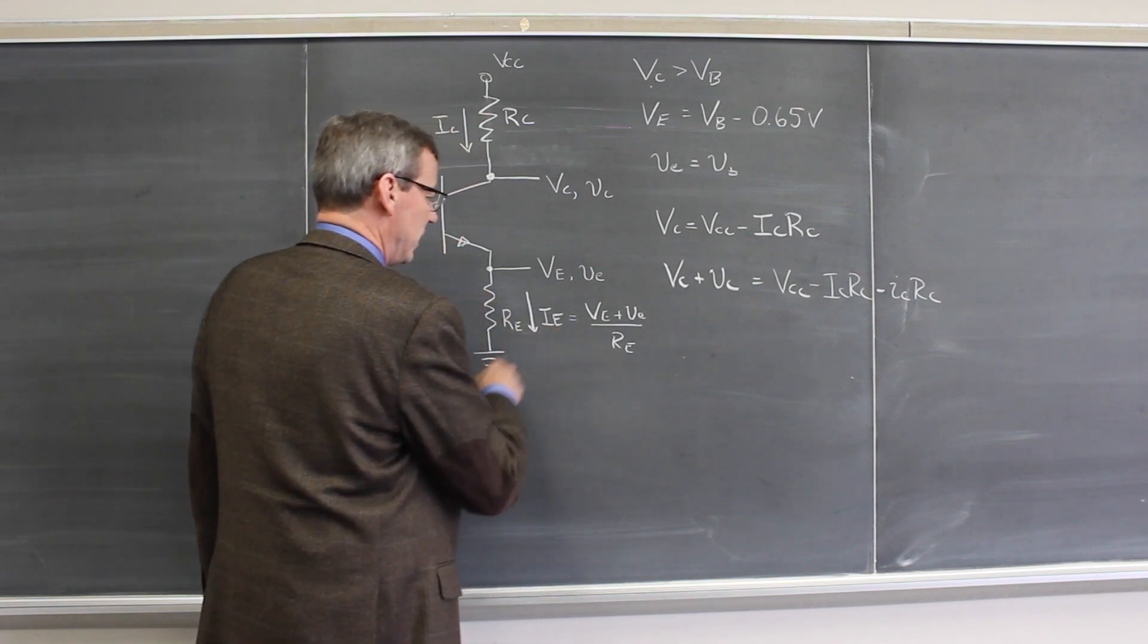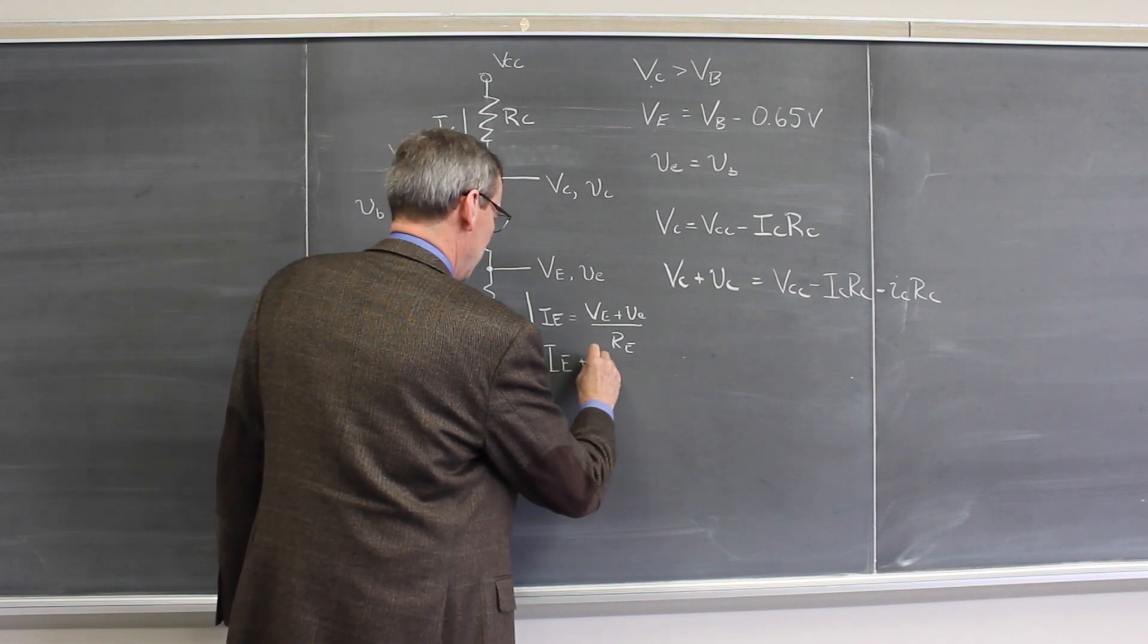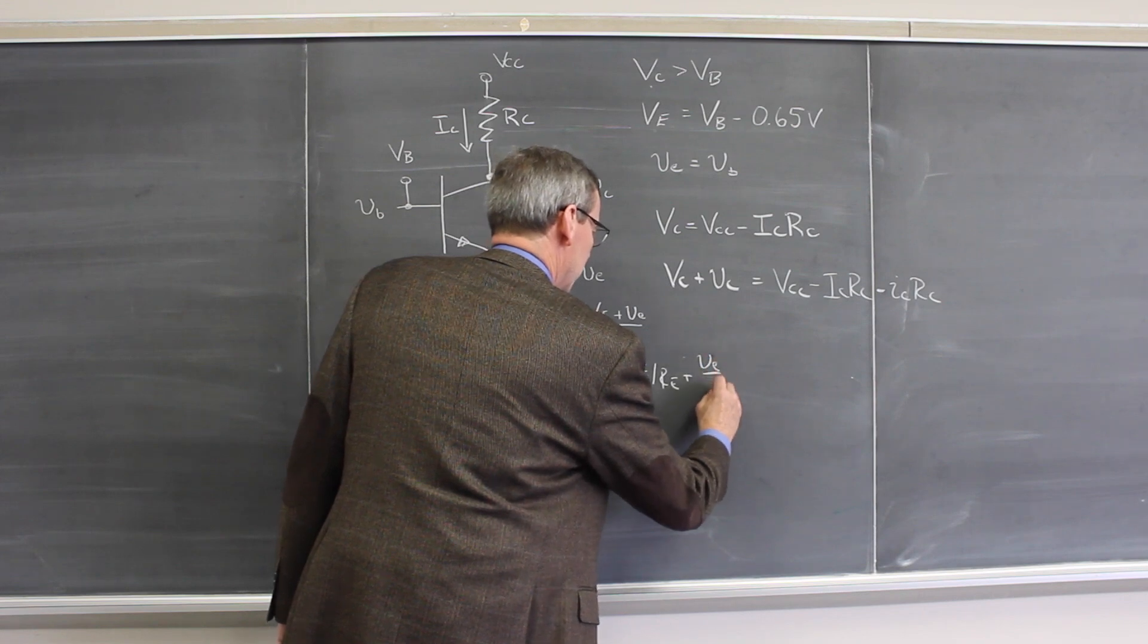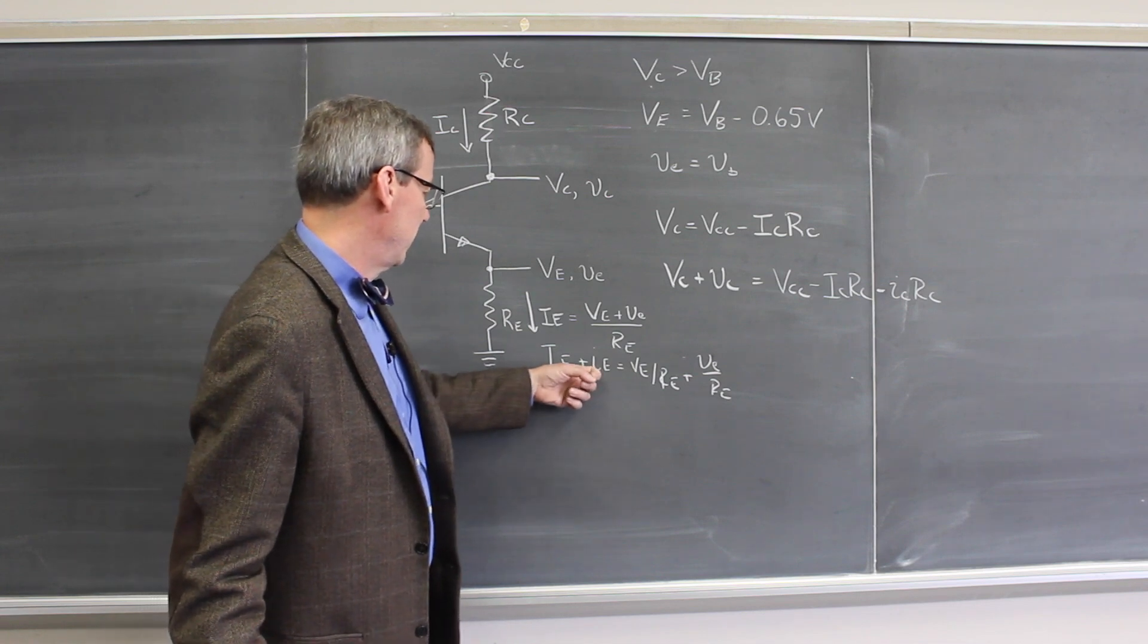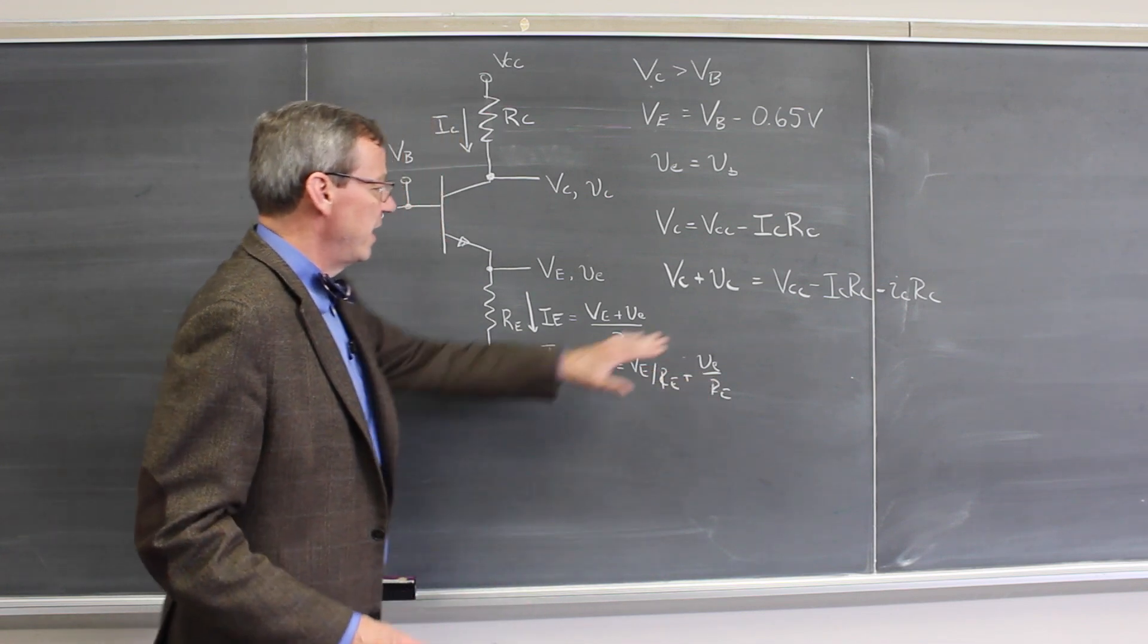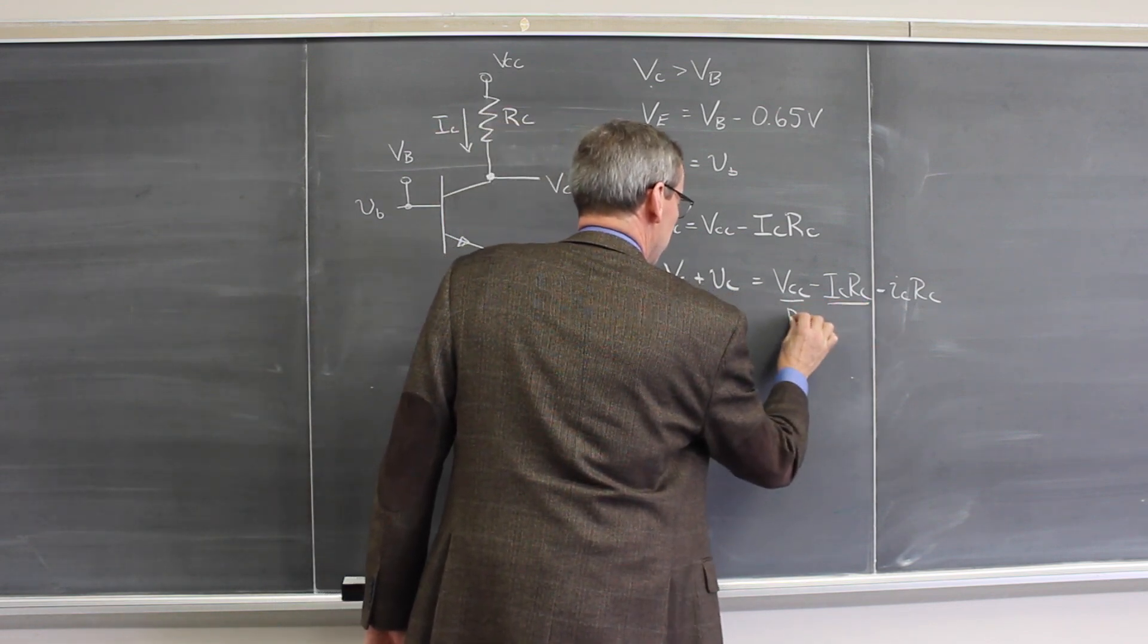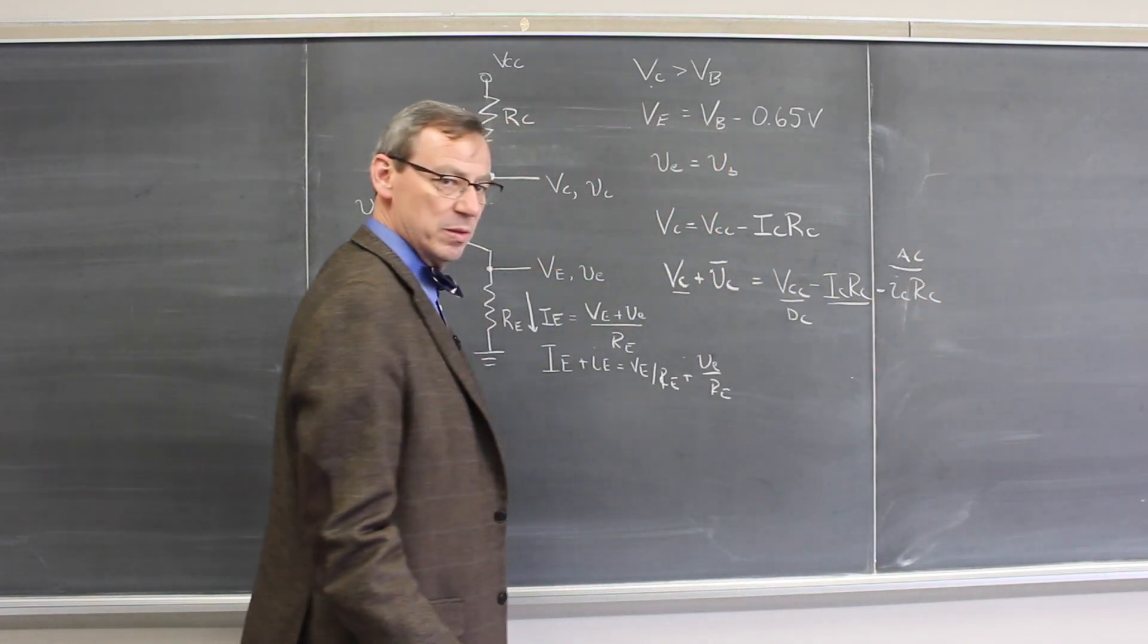Now that current here, I should have written this actually as IE plus IE is VE over RE plus little VE over RE. So there's the DC current, VE over RE. There's the AC current, little VE over RE. And I can now do a couple of things. I can separate this into the DC parts. So that, that, and that are all DC. And that, and that are AC.